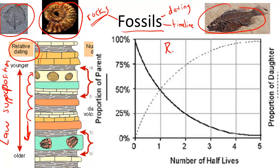One more technique is called radiometric dating. Radiometric dating uses knowledge of the half-life of isotopes. Carbon-14 is a common isotope used. This is used to determine the age of a rock where the fossil was found.